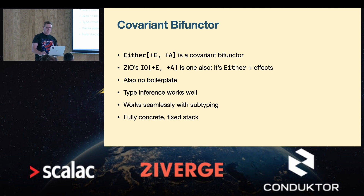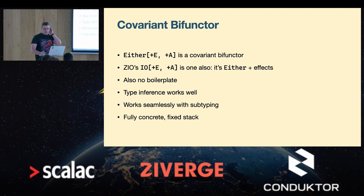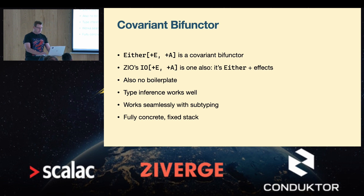The fixed, concrete stack might appear as a negative, because monad transformers look very flexible — you can just stack things together as you like. But in practice, you don't really need that flexibility, and it comes with real downsides. With ZIO's IO type, you can put whatever you like into that error channel, which actually gives you a lot of flexibility. A good example is optionality — that can be encoded into the error type, kind of like mixing in OptionT, but much easier. When you add more monad transformers, the types get more complicated and performance gets worse.